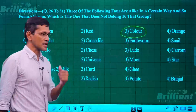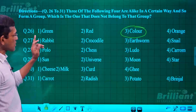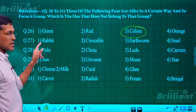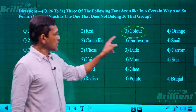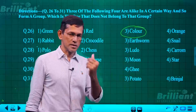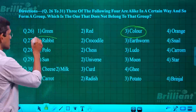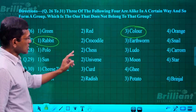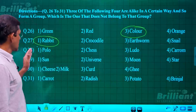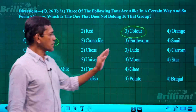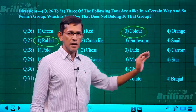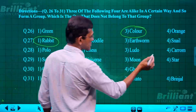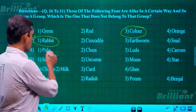Next: rabbit, crocodile, earthworm, and snail. Rabbit is an animal, and so are crocodile, earthworm, and snail. The answer is rabbit — it's different from the group. Then: polo, chess, ludo, and carom. Chess, ludo, and carom are all board games, but polo is not a board game, so polo is the answer.